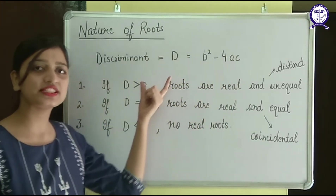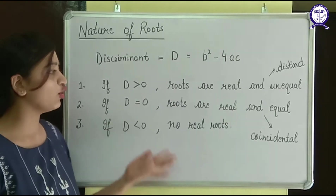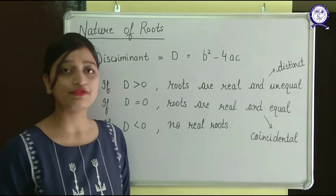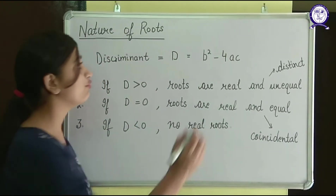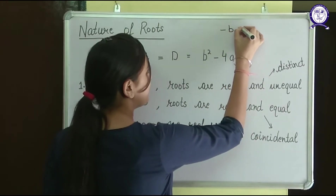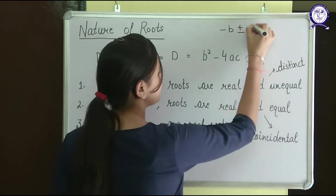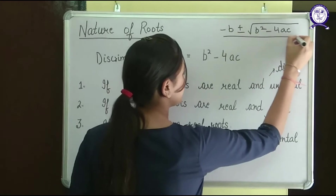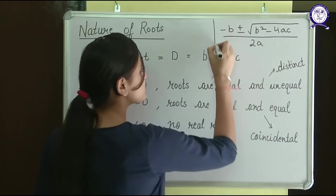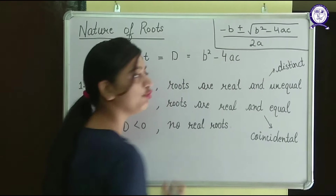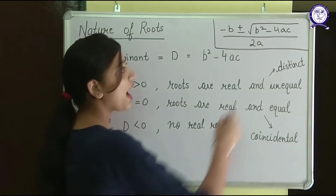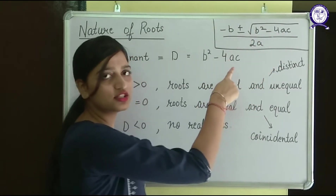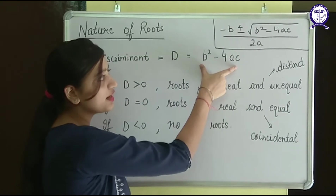According to this, we have certain rules we need to follow while doing the question. What is this b squared minus 4ac? If you remember our quadratic formula, the formula is: minus b plus or minus under root of b squared minus 4ac, upon 2a. You can see that the part under the root is the same as my discriminant, that is b squared minus 4ac. So this number is my discriminant.